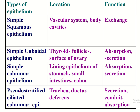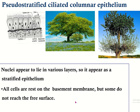Another type is pseudostratified ciliated columnar epithelium, present in the trachea and ductus deferens. It is called pseudostratified because it looks like stratified epithelium, but it is actually a single layer since all cells are attached to the basement membrane. Some cells are tall and some are short, but all touch the basement membrane; the nuclei appear at different levels, giving a stratified appearance.